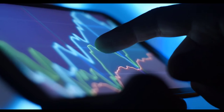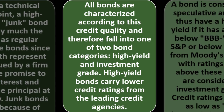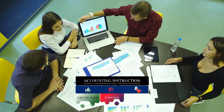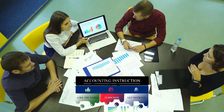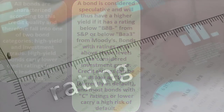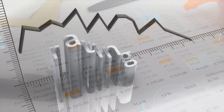Junk bonds differ because of their issuers' poorer credit quality. All bonds are characterized according to credit quality and fall into one of two categories: high yield or investment grade. Credit agencies help us determine credit ratings, which in turn help us determine risk and what kind of return to expect. Note that rating agencies are a useful tool but not perfect — there have been cases where complex securities carried more risk than their ratings suggested.